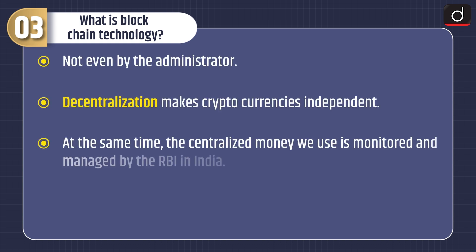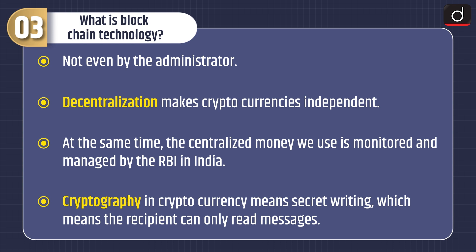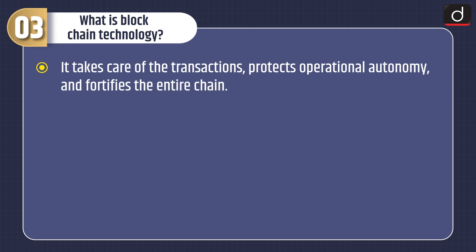Decentralization makes cryptocurrencies independent. At the same time, the centralized money we use is monitored and managed by the RBI in India. Cryptography in cryptocurrency means secret writing, which means only the recipient can read messages. It takes care of the transactions, protects operational autonomy, and fortifies the entire chain.